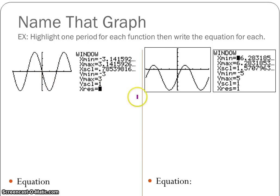We're going to highlight one period of the function for each graph. We're going to start on the y-axis because we haven't done any graphs with horizontal shifts yet. So that is one period. What we're going to do is determine what is the shape of the function.